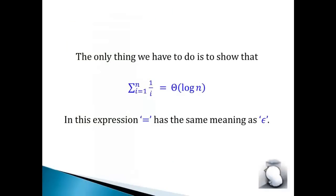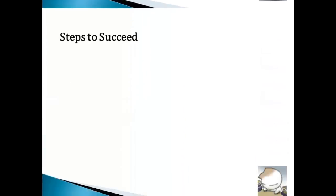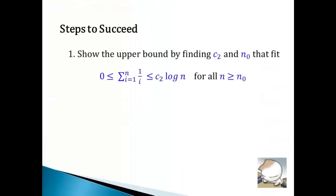By the definition of big theta, you have to show that harmonic series has theta log n. Although big theta log n is a set, we traditionally use equal symbol instead of member notation. There are three steps to succeed solving this problem.